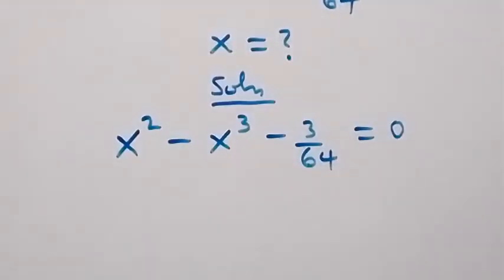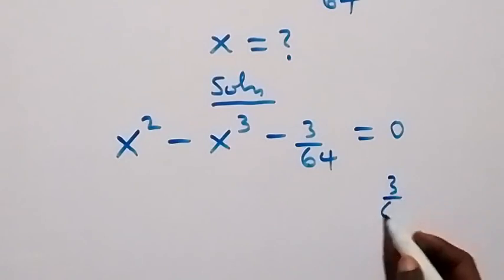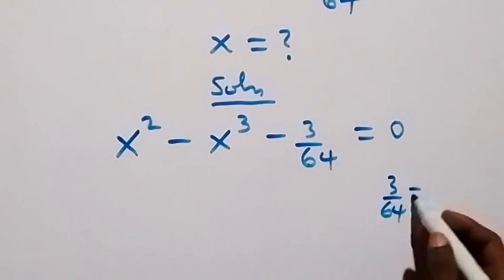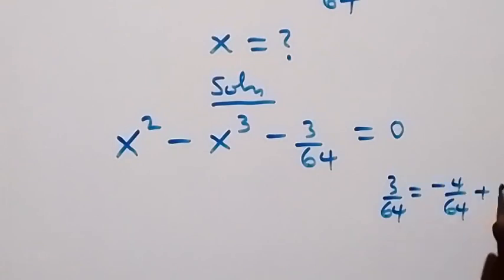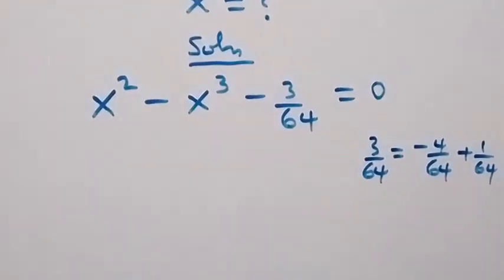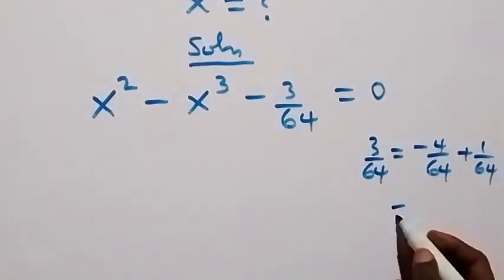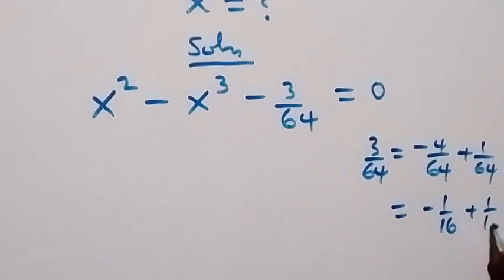In the next step we can write 3 over 64 again, and when we separate it we can write it as minus 4 over 64 then plus 1 over 64, so this will still give us 3 over 64. And this can be reduced as minus 1 over 16 then plus 1 over 64.